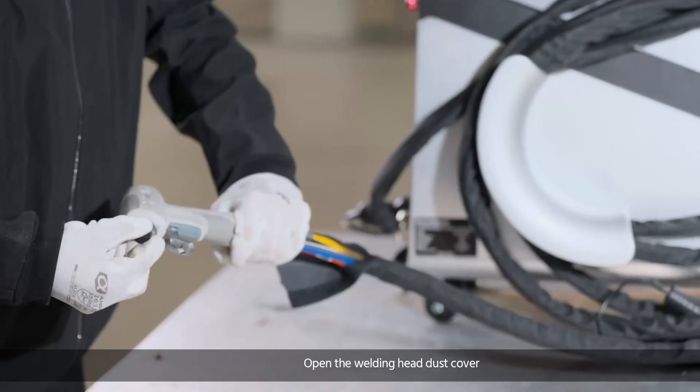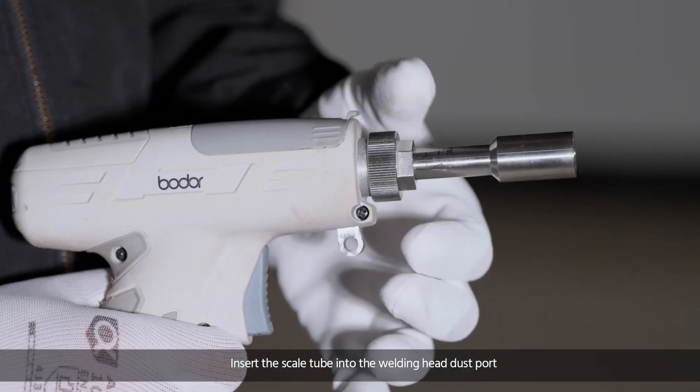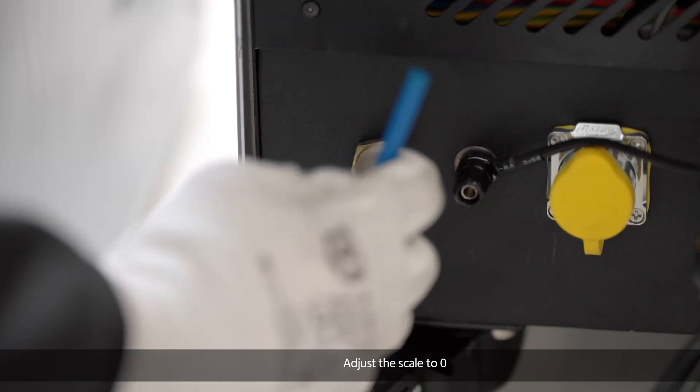Open the welding head dust cover and loosen the dust port nut. Insert the scale tube into the welding head dust port and adjust the scale to zero.